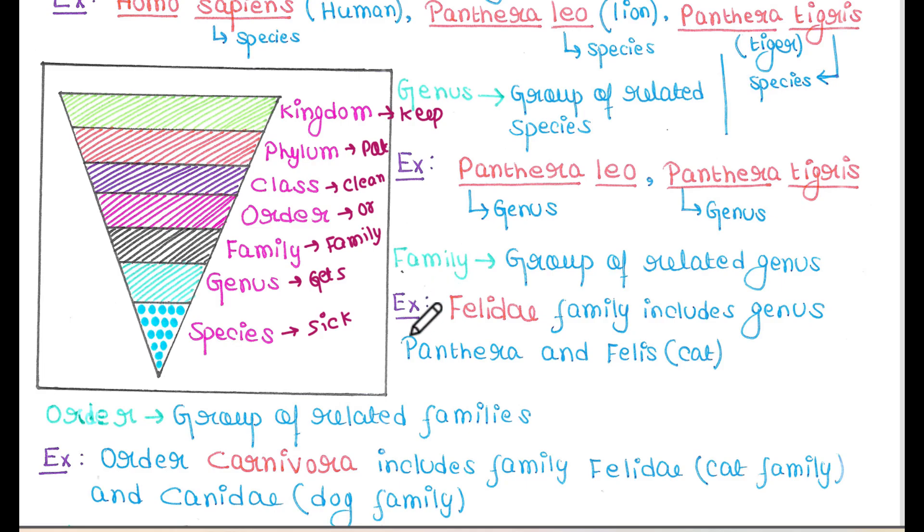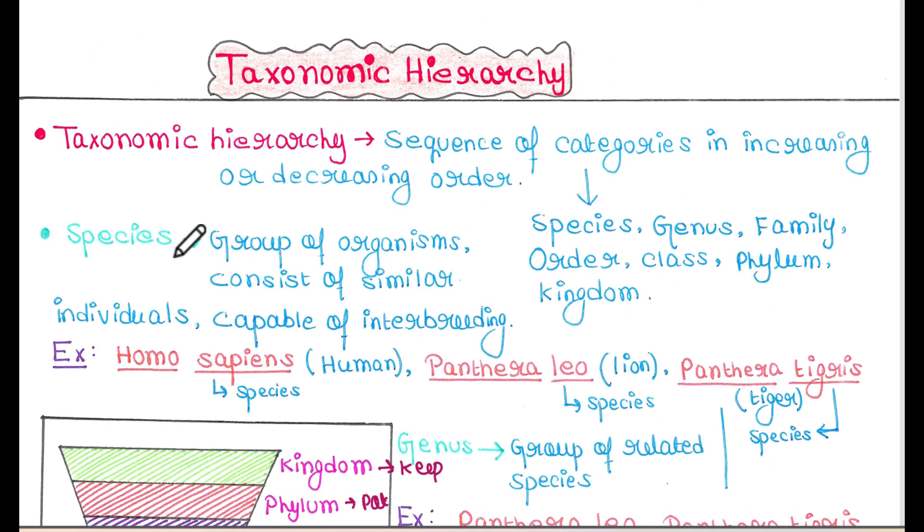Let's start from species. A species is a group of organisms consisting of similar individuals capable of interbreeding. All humans are capable of interbreeding, right? But they will not interbreed with tigers.